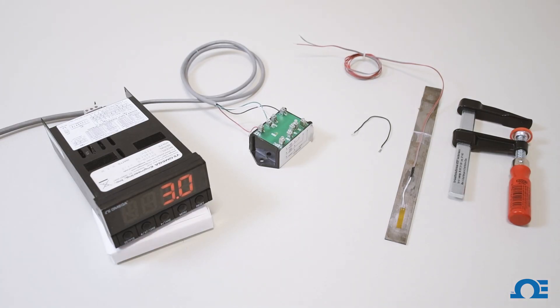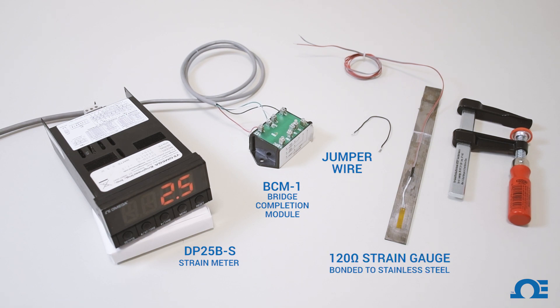For this process of strain measurement, we need a DP25B-S strain meter, a bridge completion module BCM-1, a jumper wire, a 120 ohm strain gauge bonded onto a stainless steel flat, and a clamp.